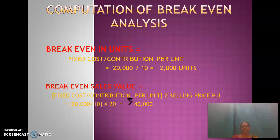For break-even in sales value, applying fixed cost divided by contribution per unit multiplied by selling price per unit: the 2,000 units is multiplied by 20 rupees per unit, which amounts to 40,000 rupees. This means if the company has sales of 40,000 rupees there is no profit or loss. After crossing 40,000 rupees, every additional rupee is profit. So the sales target should be 40,000 rupees, or 2,000 units.